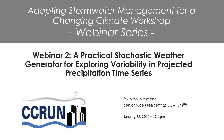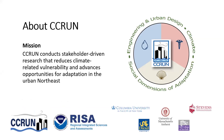Hello and welcome to the second webinar in our series, Adapting Stormwater Management for a Changing Climate Workshop. This is the second of four webinars preceding an in-person workshop in D.C. in March. This workshop is sponsored by CC-RUN, the Consortium for Climate Risks in the Urban Northeast. We are a NOAA-funded Regional Integrated Science and Assessment Program, and we conduct stakeholder-driven research focusing on climate change in the urban northeast.